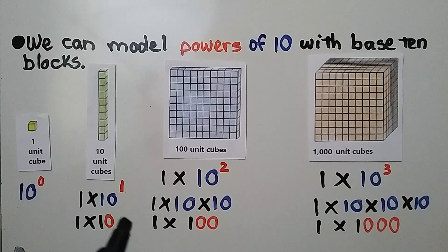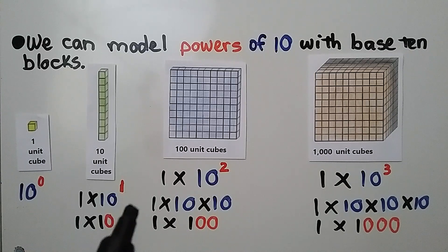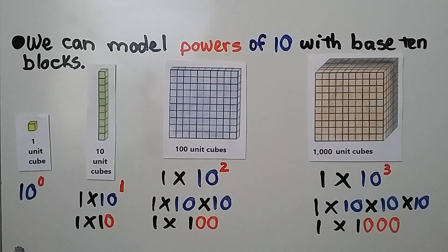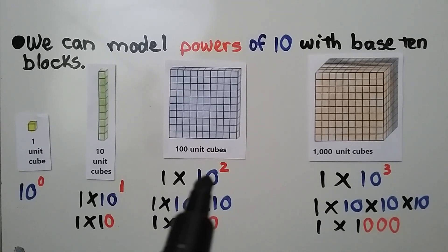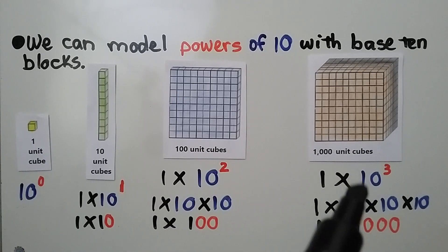The exponents are read as ordinal numbers. Ordinal numbers are like the numbers of your grade levels: first, second, third, fourth. So this is 10 to the first power, 10 to the second power, 10 to the third power.